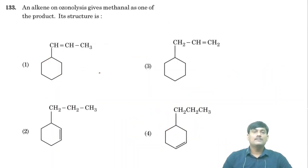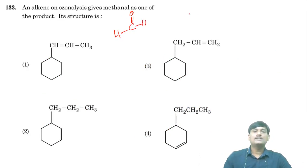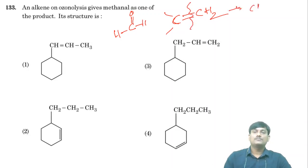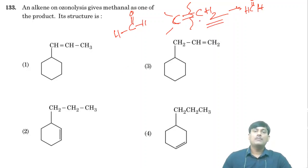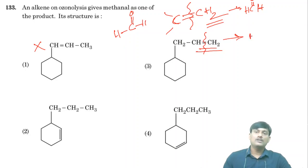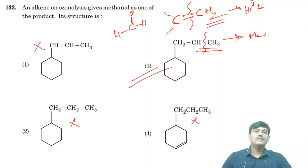An alkene on ozonolysis gives methanal (HCHO) as one product. Methanal is produced when there is a =CH₂ fragment in the alkene. Among the options, the alkene that contains a terminal =CH₂ group will give methanal on ozonolysis. The third option is the correct answer, as it contains the double bond =CH₂ fragment.